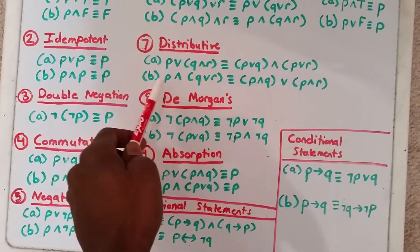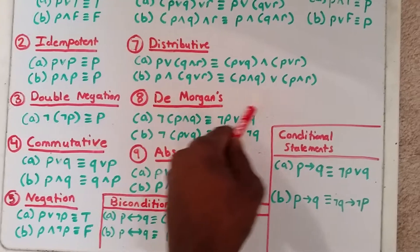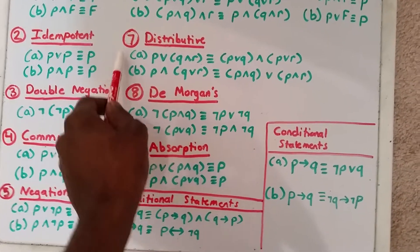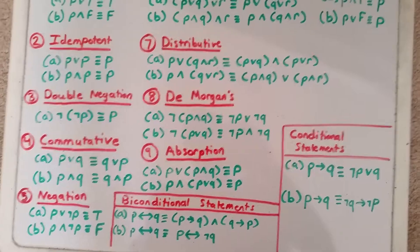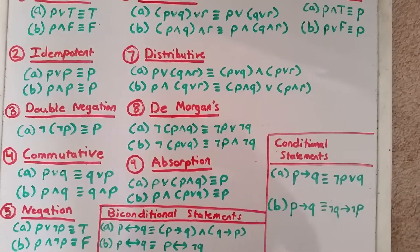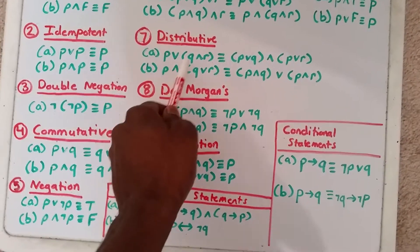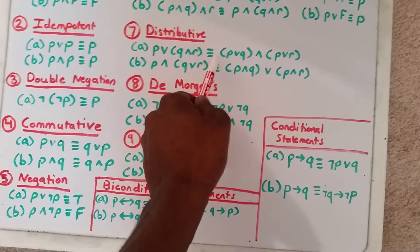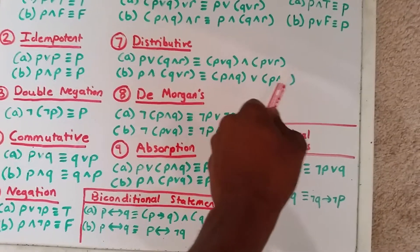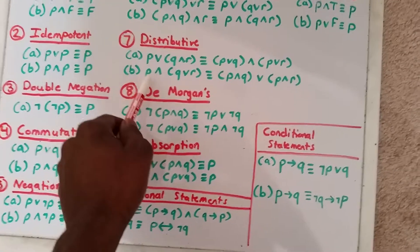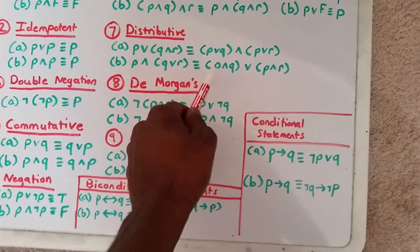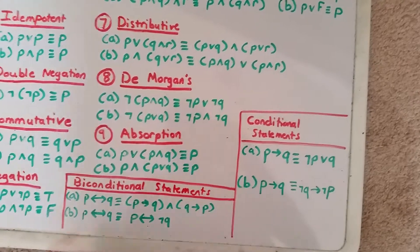Next, we have the distributive law, which is a very useful one for the more complicated tautologies or logical equivalences. P or (Q and R) is logically equivalent to (P or Q) and (P or R). And P and (Q or R) is logically equivalent to (P and Q) or (P and R).